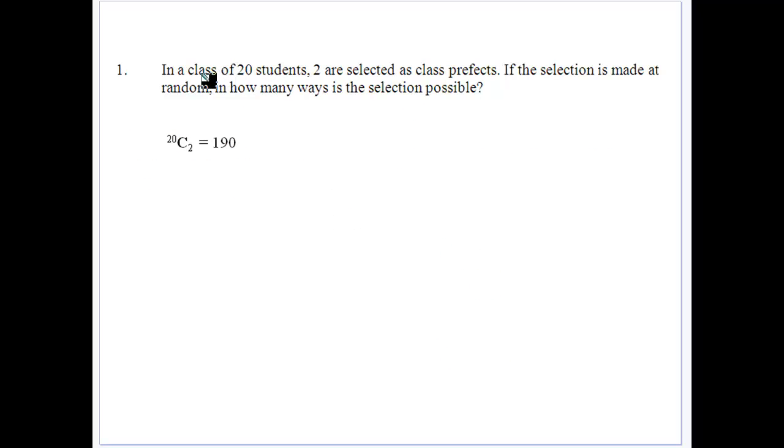So let's have a look at some questions. We've got a class of 20 students. Two are being selected as class prefects. If the selection is made at random, how many ways is the selection possible? Well, what we're looking at is how many different ways can we select two students from a group of 20? Order's not important. We're sensing in the question that the order is not important because they're just prefects. They're not in any hierarchy there. So 20C2 gives us 190.